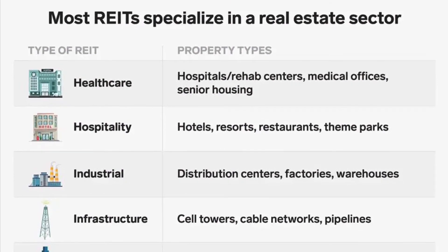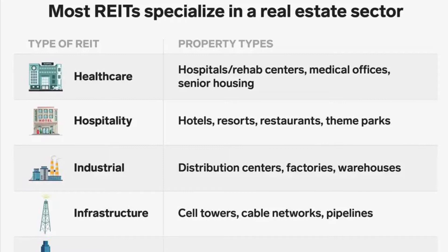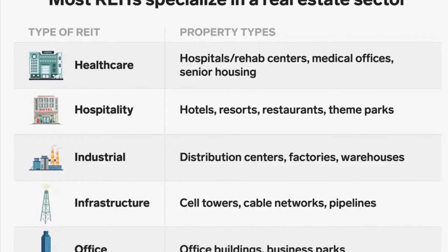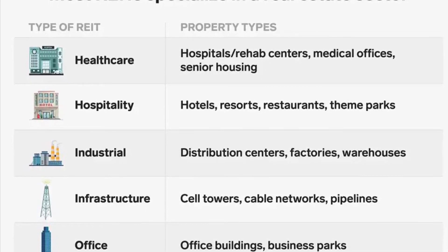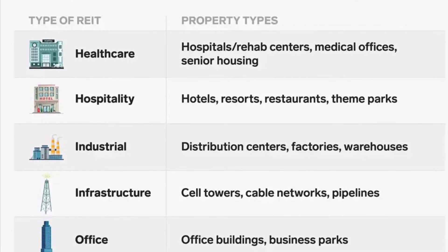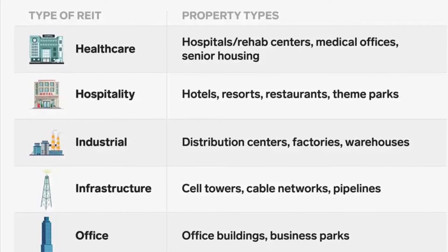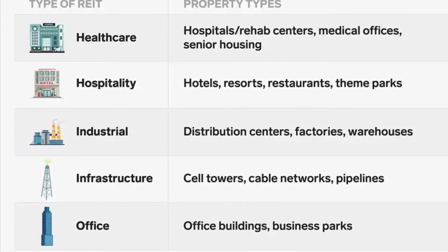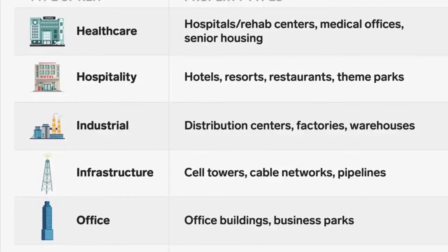Now I'm going to talk about different types of REITs and the property types to help you better understand each field. The different types are: Healthcare — hospitals, rehab centers, medical offices, and senior housing. Hospitality — hotels, resorts, restaurants, and theme parks. Industrial — distribution centers, factories, and warehouses like an Amazon warehouse. Infrastructure — cell towers, cable networks, and pipelines. Office — office buildings and business parks.